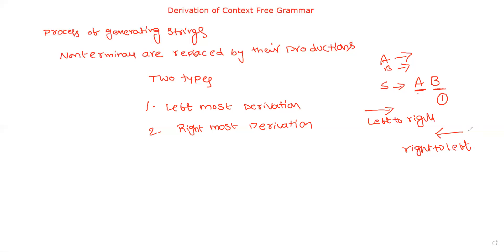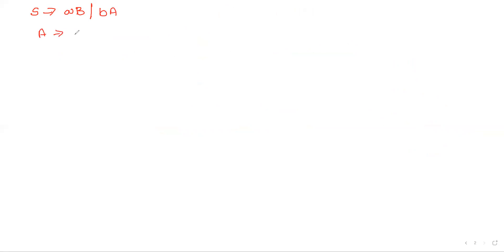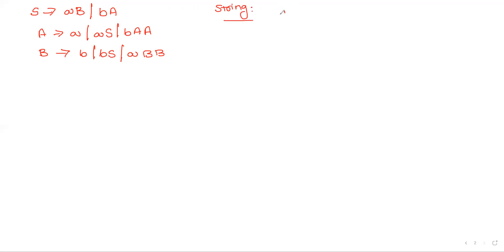Now consider a context-free grammar. We will derive a string using both leftmost and rightmost derivation. The given grammar is: S → aBbA | aASb | aa; A → aAs | b | a; B → bBs | ab. The required string is aabbabba. First I will explain the leftmost derivation.